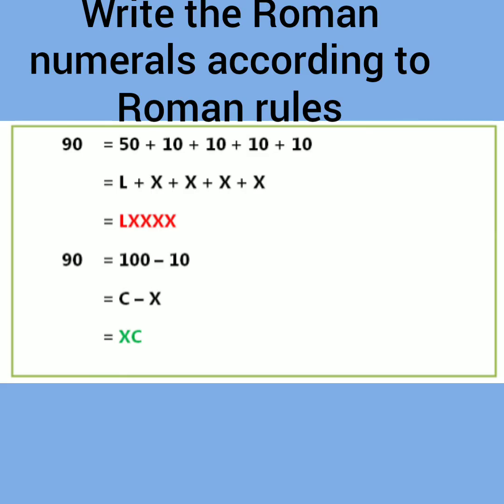We can write a number in two different forms. So we have to know which one is right and which one is wrong. For instance, here 90 can be written as LXXXX and 90 can also be written as XC. But according to the rule we have the first one as wrong and the next one as right.